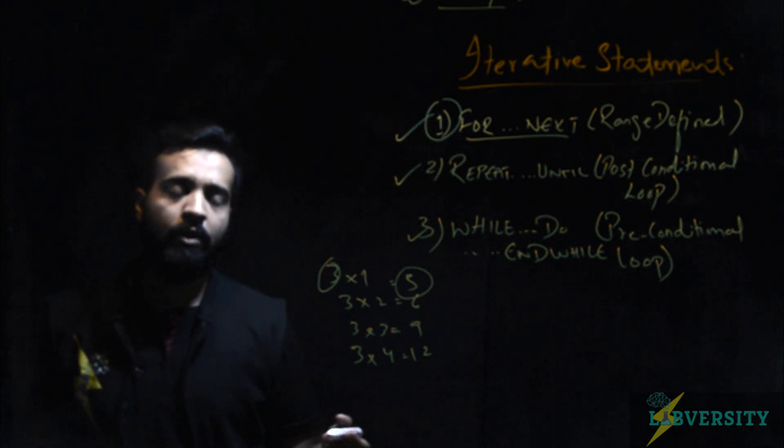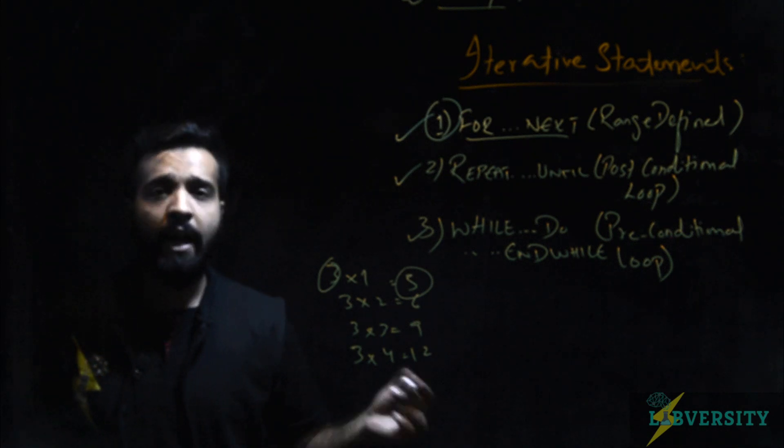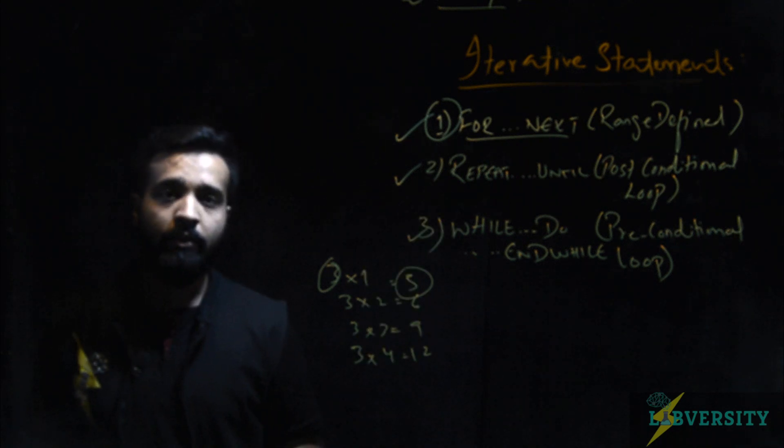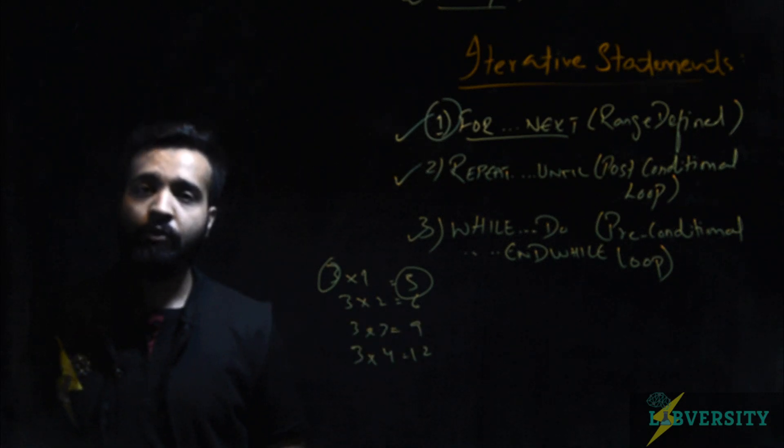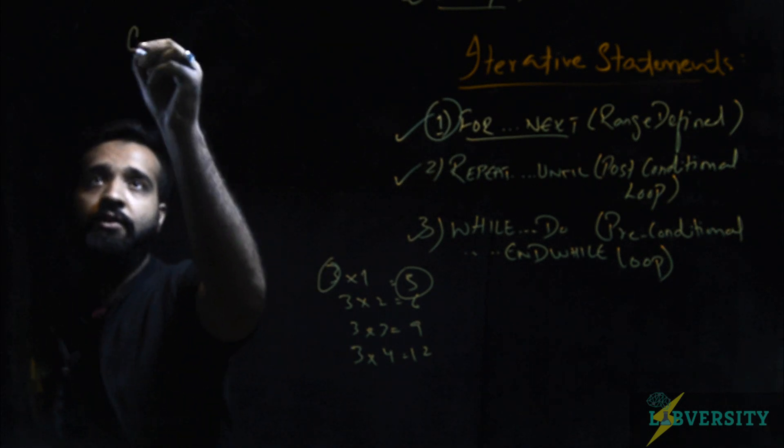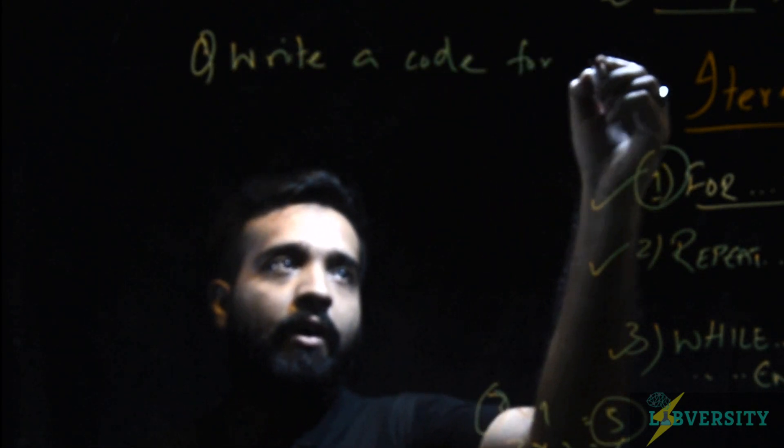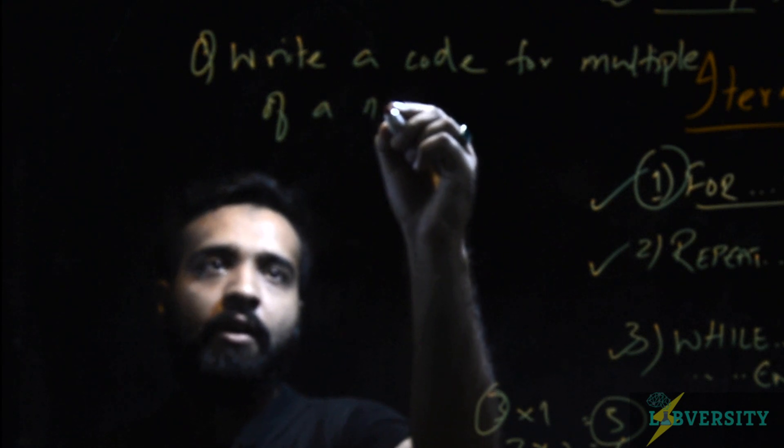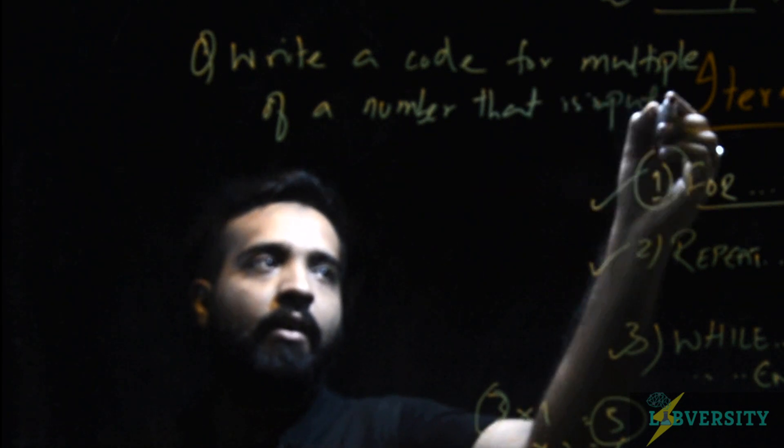If I had to write a code or pseudo code in which I take one input, one number as input and print its 10 multiples, I know that I have to repeat a statement 10 times in order to get the table or multiplication table of a particular number. For this case, for-next loop is the best loop because the range of repetitions (that is 10) is predefined. Our question is: write a code for multiples of a number that is input, first 10 multiples.